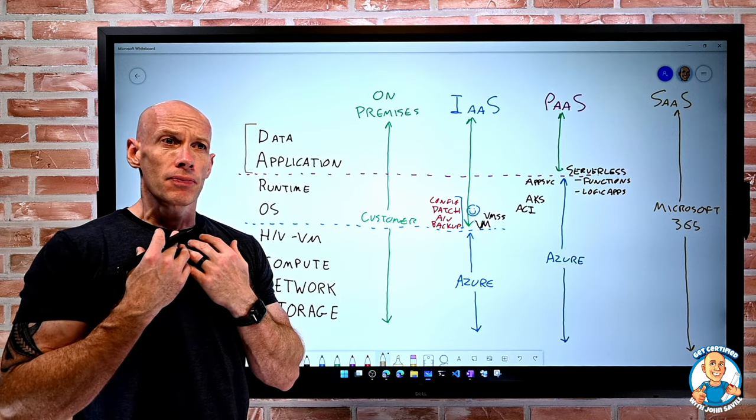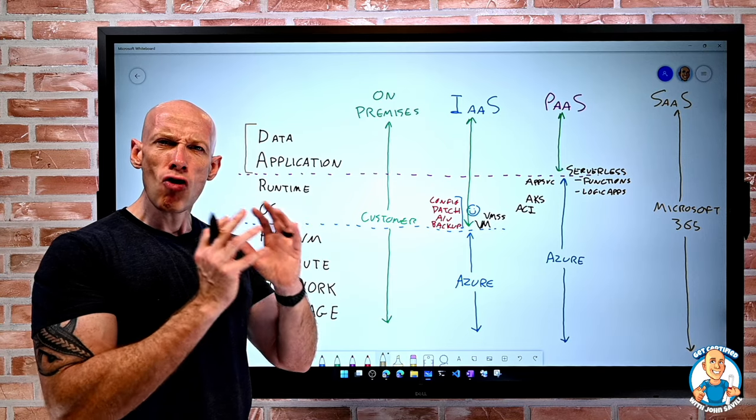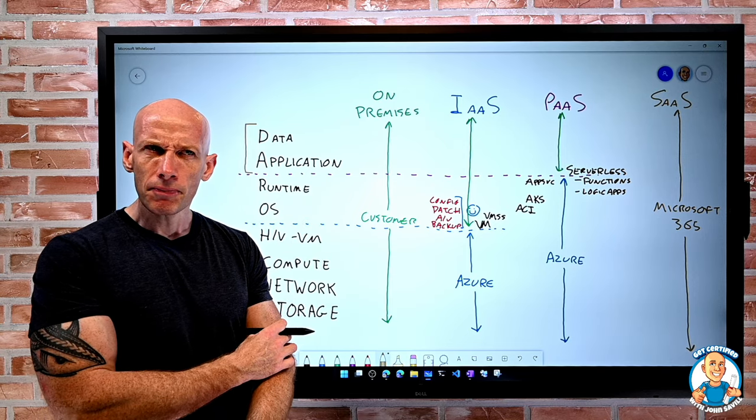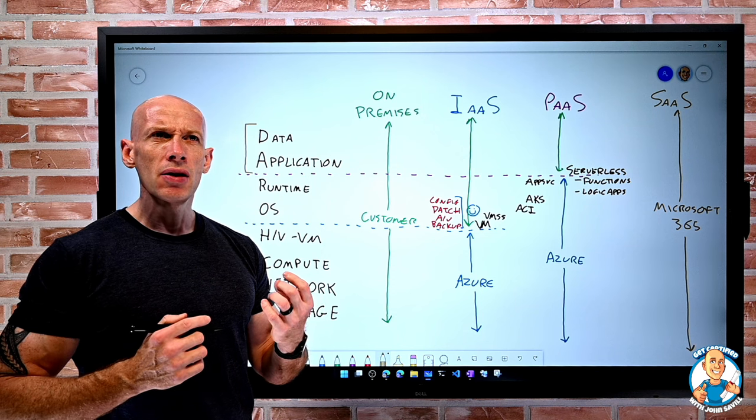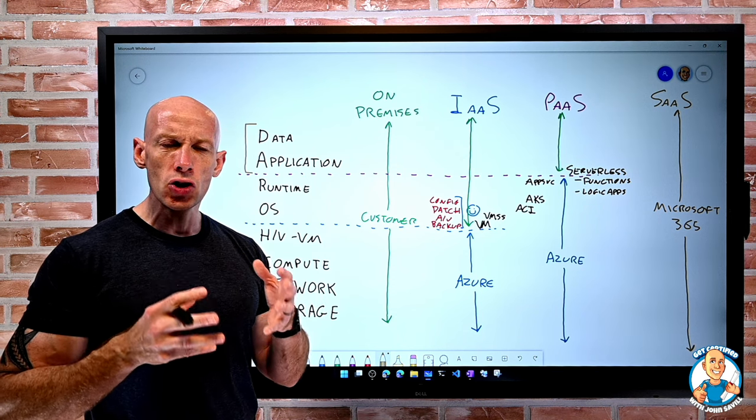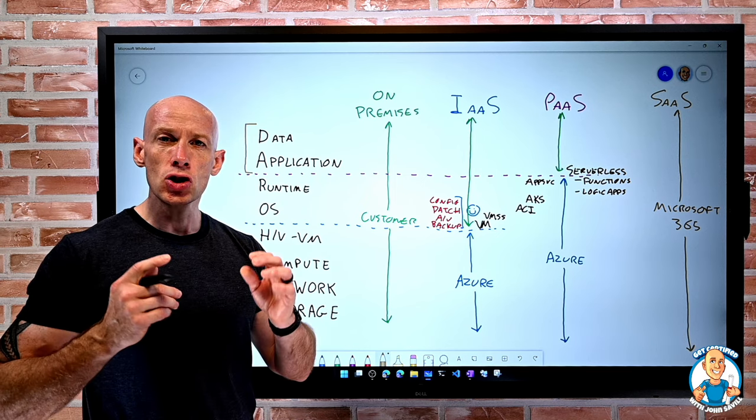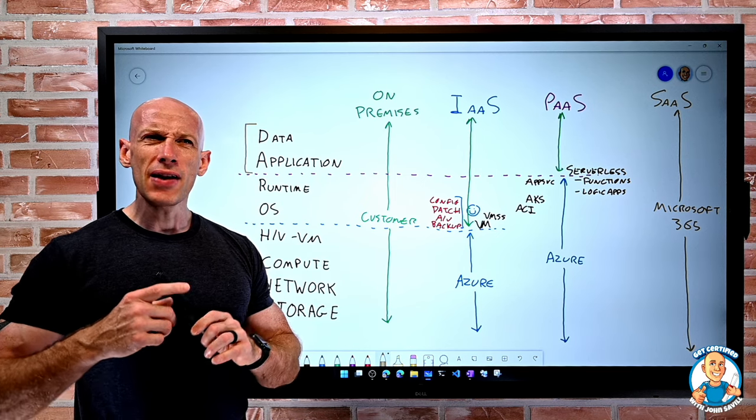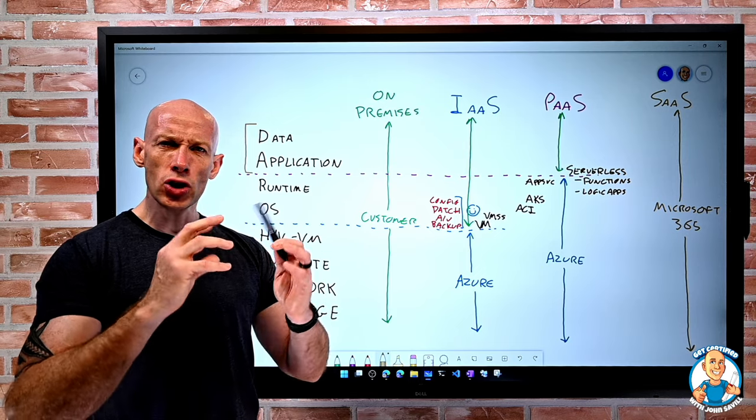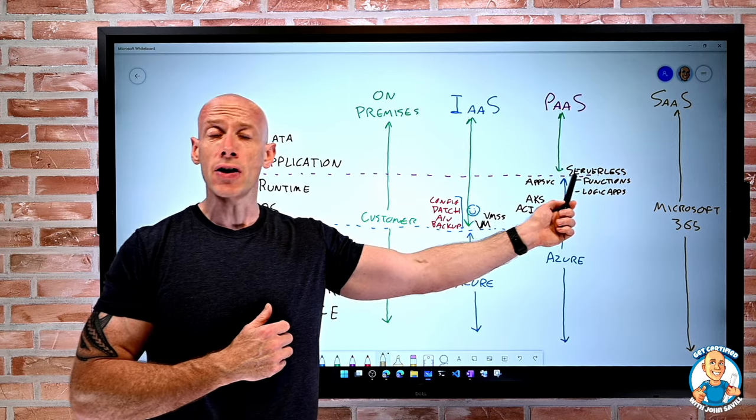Now, maybe I need to run this unit of work. Anytime a certain file gets written to a storage account, or a message gets written to a queue, that screams serverless. And if I want kind of that rich code and triggering, that's probably going to be Azure functions.